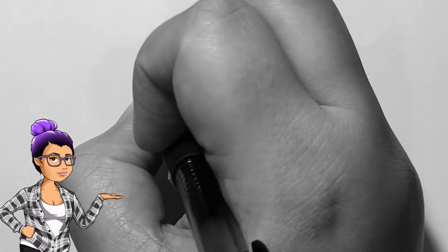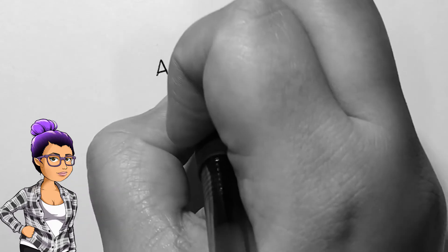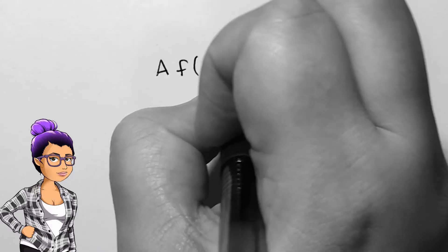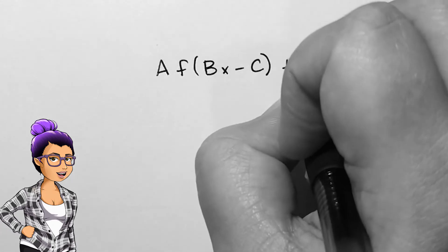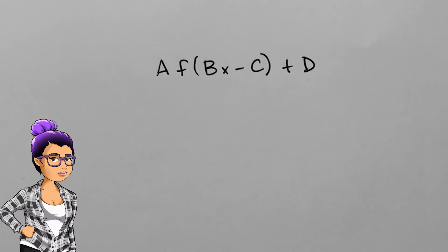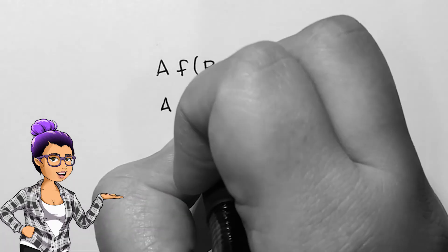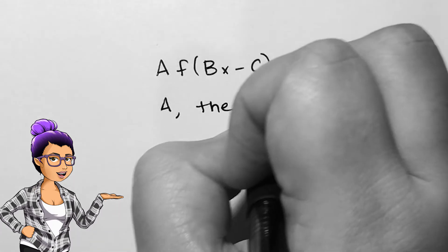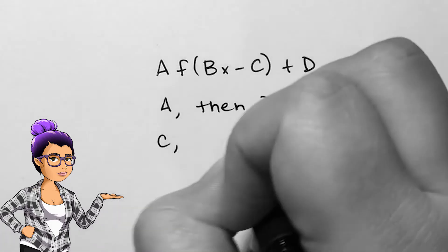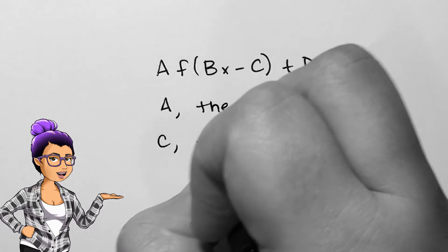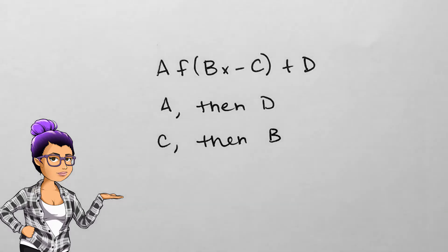If we see a function f and it has a lot of transformations applied to it — a times f — we can rely on our good old order of operations for part of our order. The a and the d, numbers which affect vertical transformations, will behave as we would expect: we multiply or stretch by a, then add or shift up or down according to d. Since everything affecting the horizontal transformations happens the opposite of what we would expect, the order will happen in the opposite way as well. We'll shift left or right according to c, then divide or compress by b.